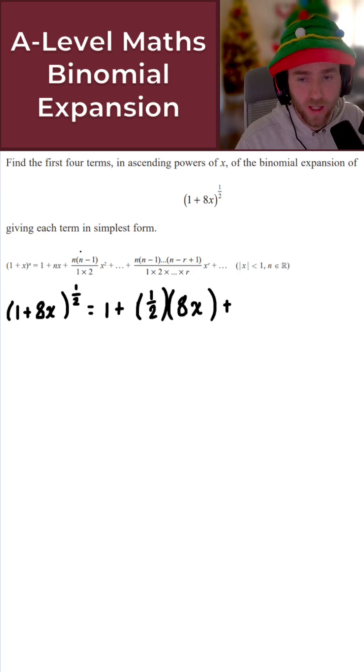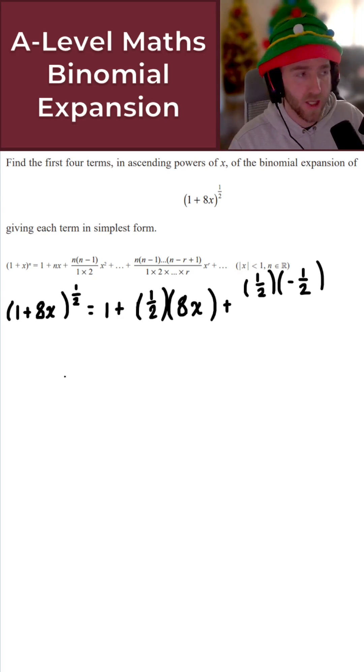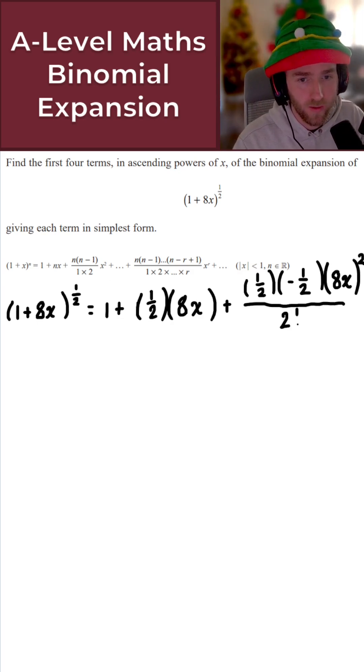Now for the third term, that's N times N minus 1. So that's 1 over 2. So 1 over 2 times by N minus 1, so that's going to be minus a half. So 1 over 2 minus 1 is minus a half. I then times it by X squared. So it's going to be 8X all squared. Make sure you square the full thing. It's not just 8X squared, but 8X all squared. And this here is all over 1 times 2, which is just the same as 2 factorial. Perfect. That's the third term.